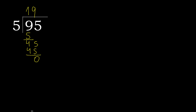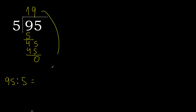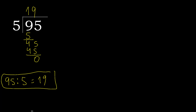The remainder is 0, and that is not a number, therefore finish it. 95 divided by 5 is 19. Finish.